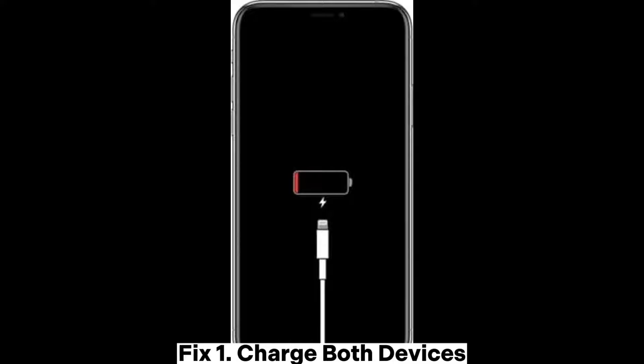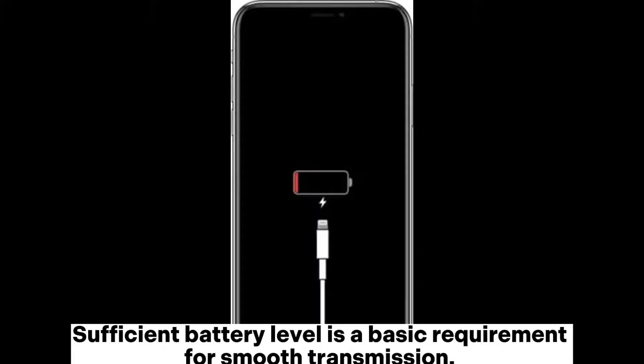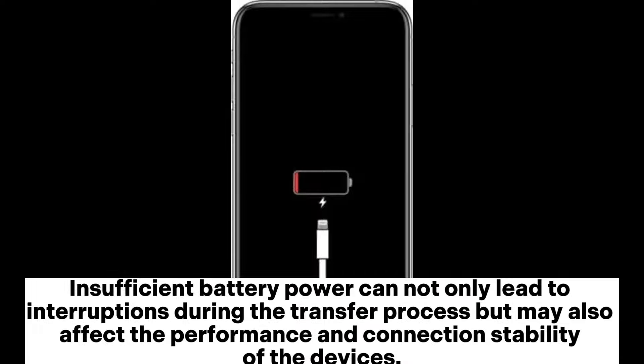Fix 1: Charge both devices. Sufficient battery level is a basic requirement for smooth transmission. Insufficient battery power can not only lead to interruptions during the transfer process, but may also affect the performance and connection stability of the devices.